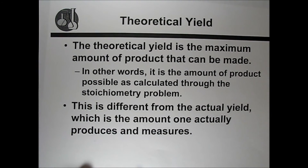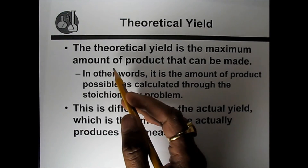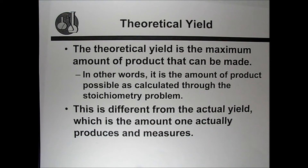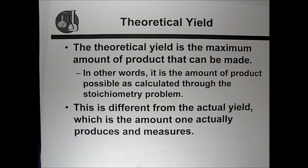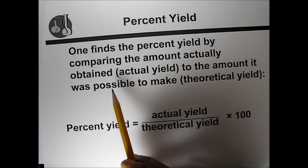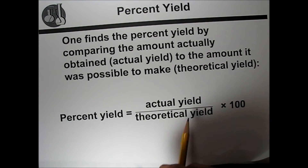Theoretical yield is the maximum amount of product that can be made — in other words, it is the amount of product possible to calculate through stoichiometry. Actual yield is the amount of product actually obtained and measured in an experiment. Percentage yield is found by comparing actual yield to theoretical yield using the formula: percentage yield = actual yield ÷ theoretical yield × 100.